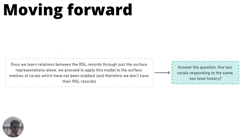Once we learn the relations between regional sea level history records through just the surface representations of the coral, we want to apply this to corals for which we do not have regional sea level history records, and aim to do a broader and more applicable surface analysis in regions where slabbing is simply impossible, not allowed, or too expensive to carry out at scale. This would lead us to answering the question: are two corals responding to the same sea level history? This has been my FYP — it's been pretty fulfilling — and we aim to work towards this goal. Thank you for listening.